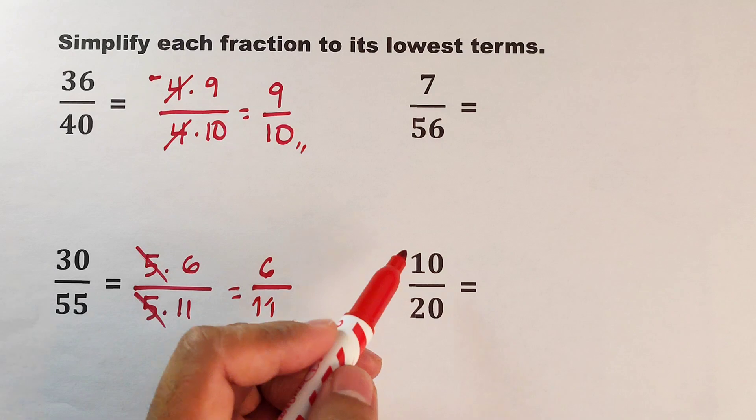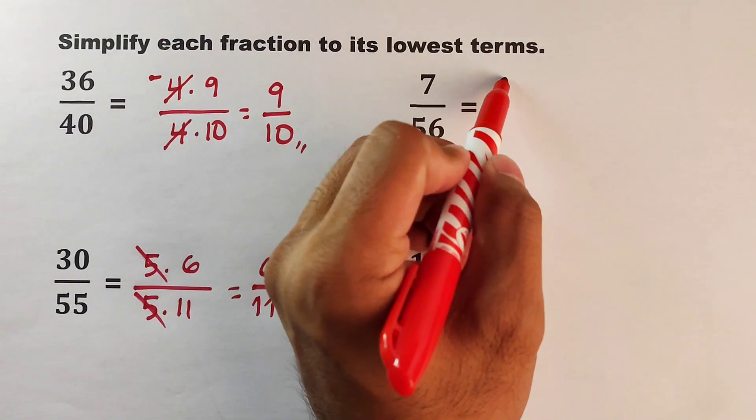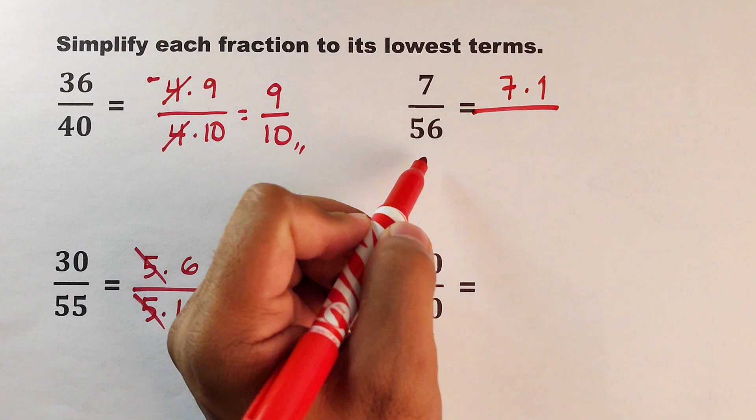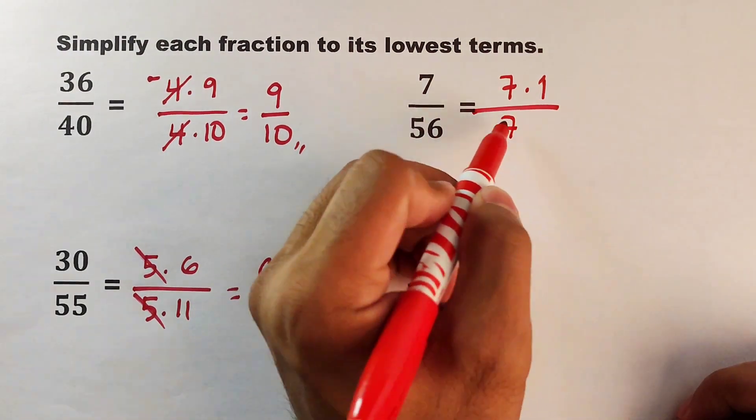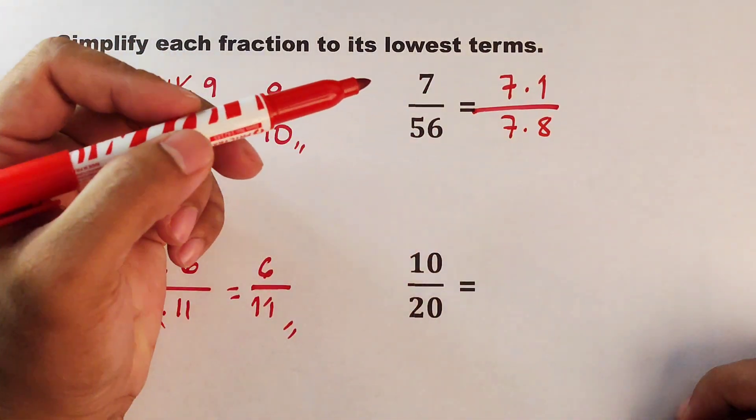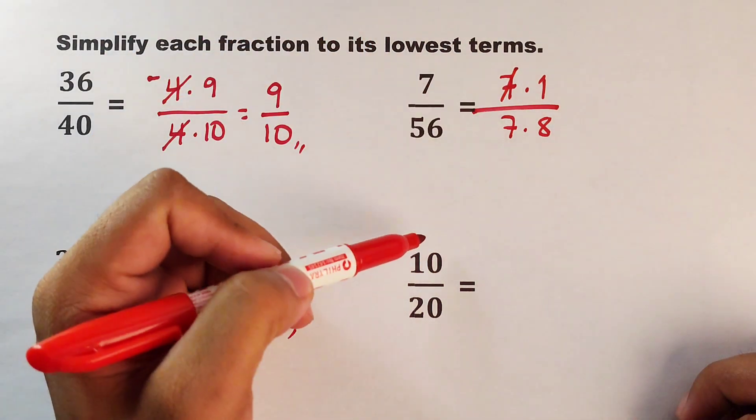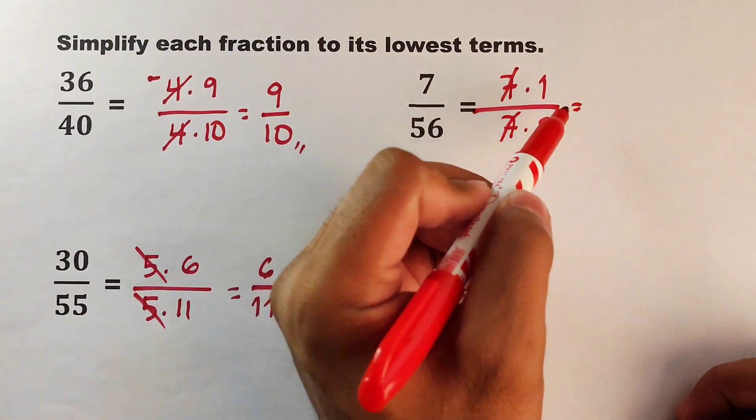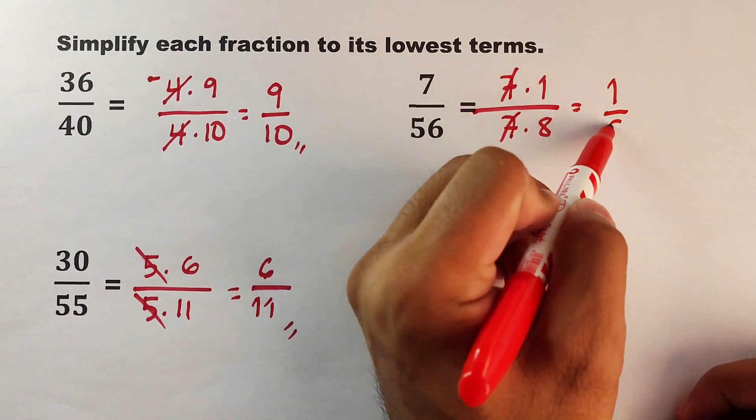Now, as for 7 over 56, 7 can be expressed as 7 times 1 over 56 can be expressed as 7 times 8. We can eliminate the 7 in the numerator and the 7 in the denominator. What we have left here is 1 over 8.